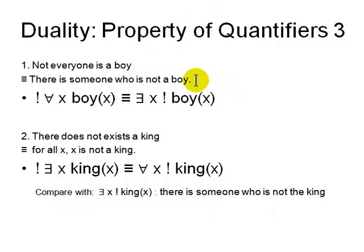Let's look at the negation. We combine negation with a quantifier. Not for all x, boy x. It's not everyone is a boy, same as there is someone who is not a boy. There exists someone x and not a boy x.